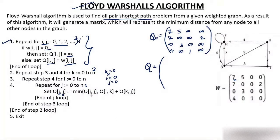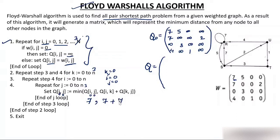Now follow this formula. Suppose I am making matrix Q. The current value of i is 0 and j is 0. Q[i][j] = minimum of Q[0][0] and Q[i][k] + Q[k][j]. Q[0][0] is 7, and Q[0][0] + Q[0][0] = 7 + 7 = 14. Which is minimum — 7 or 14? 7 is minimum, so I will put 7 again. This is how the formula works.